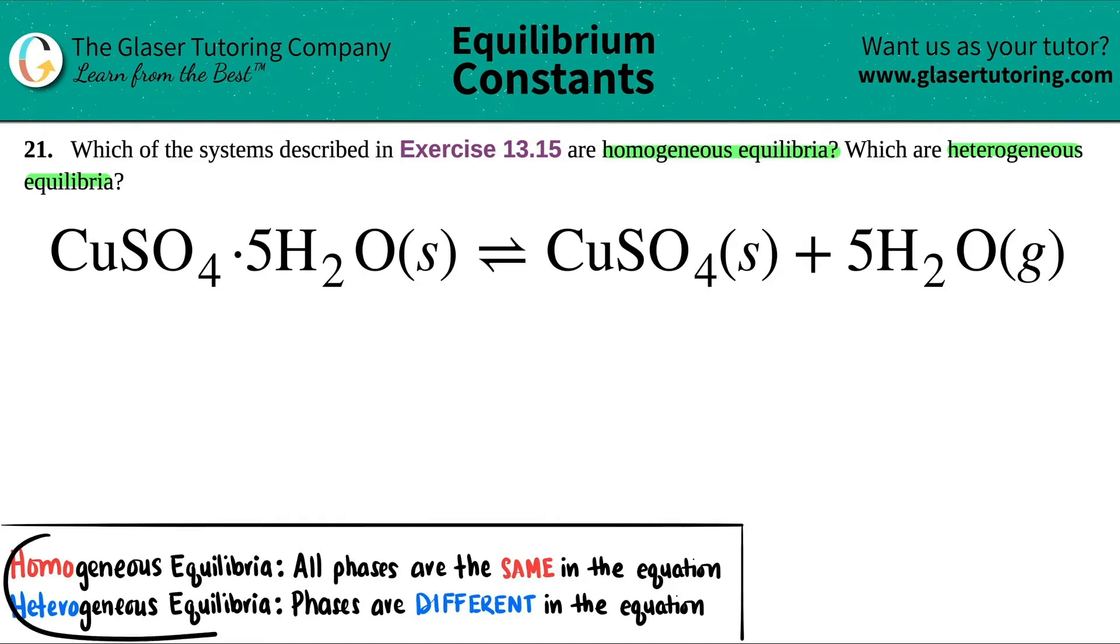Well, the rules are down here. If it's a homogeneous equilibria, all the phases are the same throughout the whole equation. If it's a heterogeneous equilibrium, those phases are different. At least one has to be different in the balanced equation.